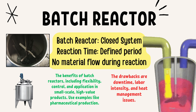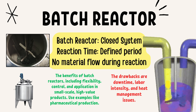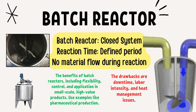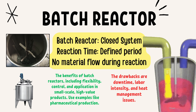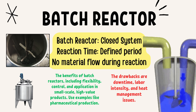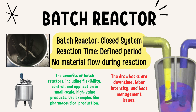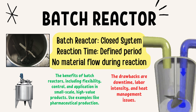An important point about the batch reactor: the product is collected only at the end of the fixed reaction time — not before or during the reaction. The key feature of the batch reactor is its versatility. Since the entire process is self-contained in a closed system, you can precisely control the reaction time, temperature, pressure, and concentration. This makes the batch reactor ideal for small-scale production, particularly in industries where different products are made in varying batches, such as pharmaceuticals or specialty chemicals.